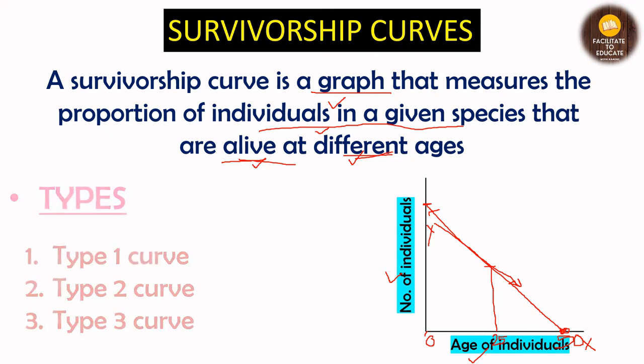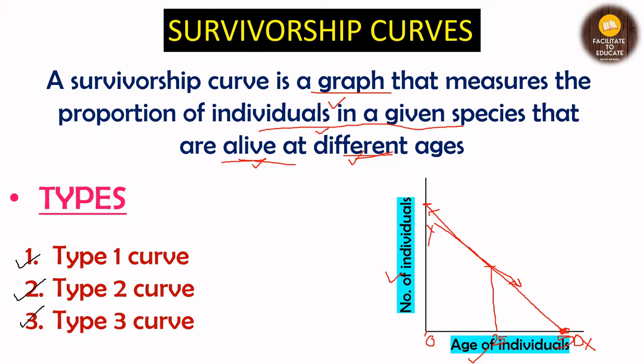There are three types of survivorship curves, given the direct names Type 1, Type 2, and Type 3. We will look at what species belong to each type of curve and what kind of curve each one shows.